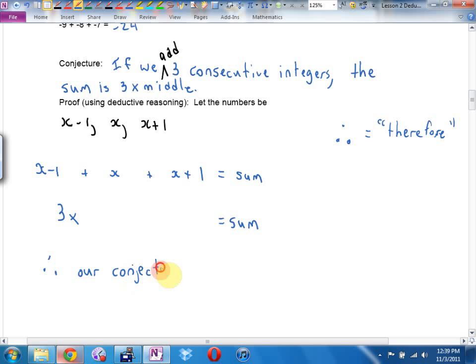Our conjecture. It's true. Why is it true, Boston? This conjecture was if we add three consecutive integers. So algebraically, I wrote the algebraic version of adding any three consecutive integers. And when I simplified it, I got 3x, which was the second half of the statement. The sum is three times the middle number. There's three times the middle number.